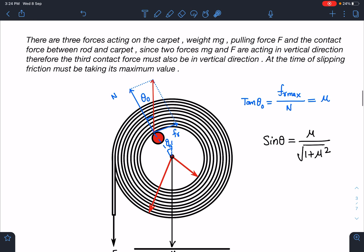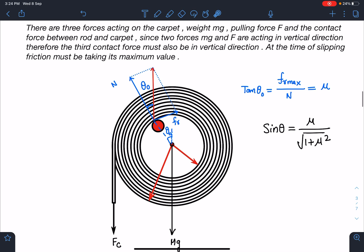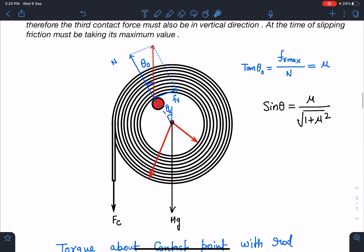If we see the FBD of it, it is a very smart solution in my opinion. There are three forces acting on the carpet: weight mg, pulling force F, and the contact force between the rod and carpet. Since the two forces mg and F are in vertically down direction, these two forces their direction is known to us.